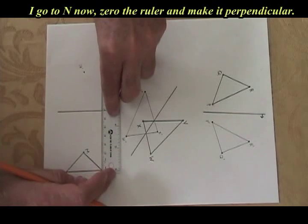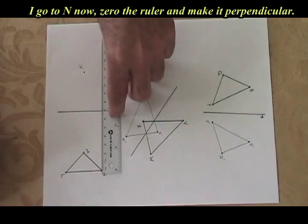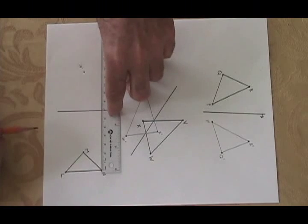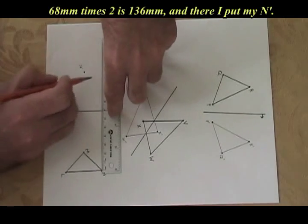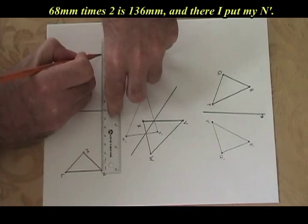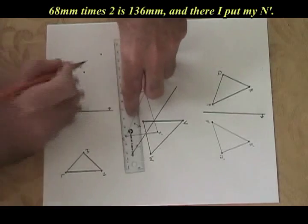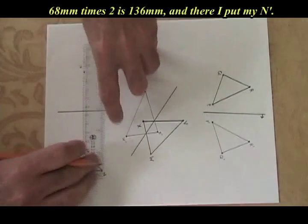I'm going to N now. Zero it. Perpendicular, 68 millimeters times 2 is 136 millimeters. Put a dot. That's N'.